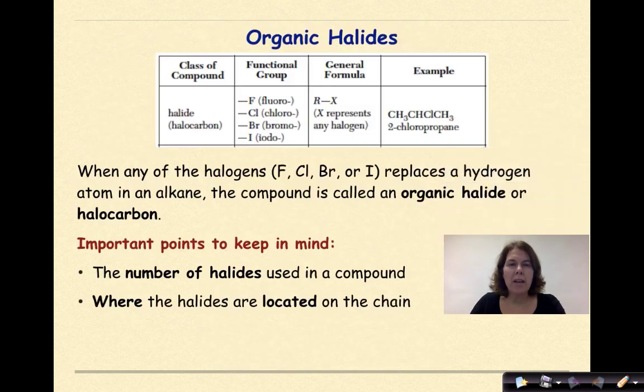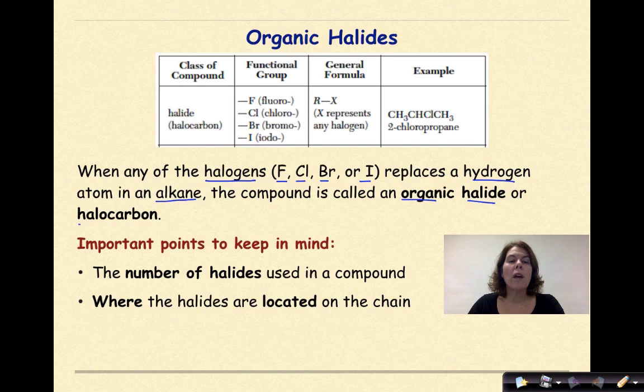So what is an organic halide? When any of the halogens, specifically fluorine, chlorine, bromine, or iodine, replaces a hydrogen atom in an alkane, the compound is called an organic halide or halocarbon. Now could we do this in an alkene or an alkyne? Yes, but for the sake of this course we're going to focus primarily on the alkanes. Important things to keep in mind: the number of halides used in the compound and where the halides are located in the chain. So again, this is referring to part of your regents reference table, specifically table R.